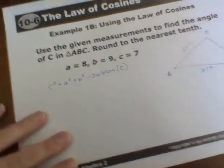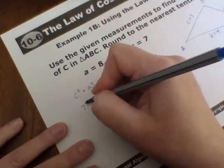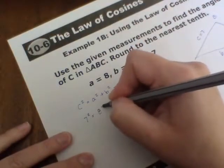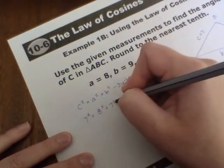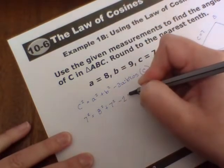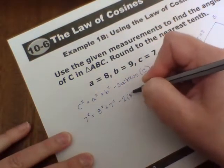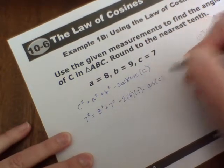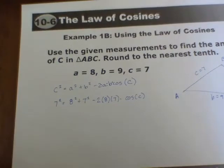So A squared plus B squared minus 2 times A times B times cosine of the C, capital C angle. All right. So filling in what we know, we have 7 squared for C.